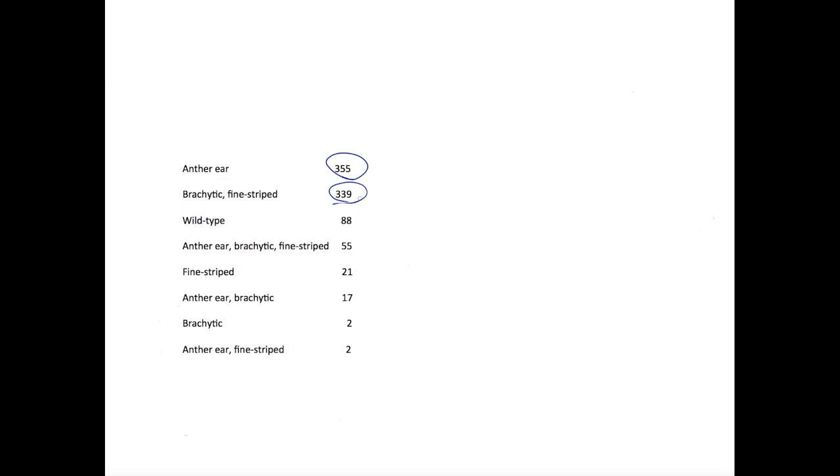This tells us which alleles are linked on the same chromosome, but not the actual gene order. In this case, the most frequent pair consists of plants with anther-ear alone and those that are brachytic and fine-striped. We can label these parental phenotypes.